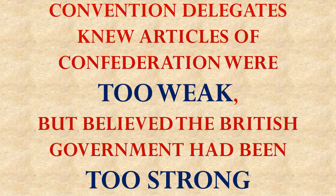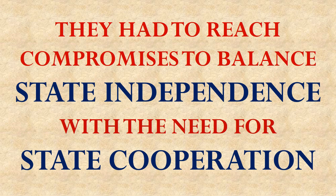So this left the delegates with a difficult problem: try to create a government strong enough to successfully deal with the problems it faces, but yet not so strong that it becomes oppressive to the people it's supposed to be serving. The problem is further complicated by the fact that the states wanted to remain independent, while at the same time they wanted to find a way to cooperate closely together. Those two desires are in tension with each other.